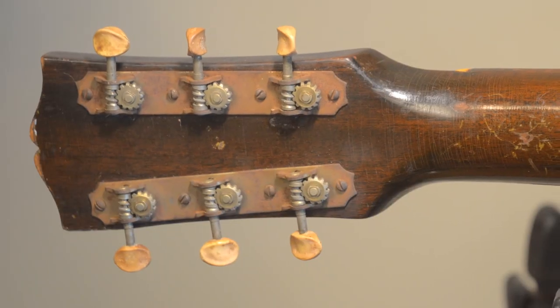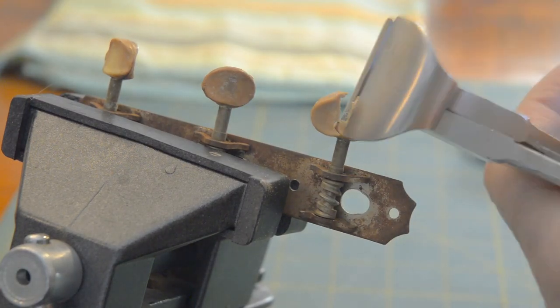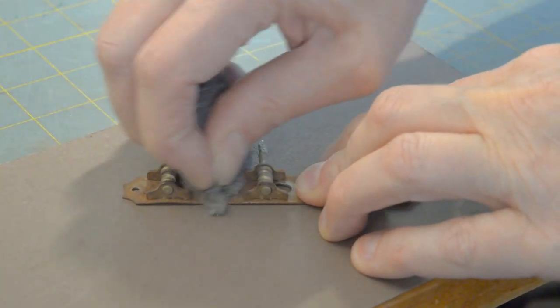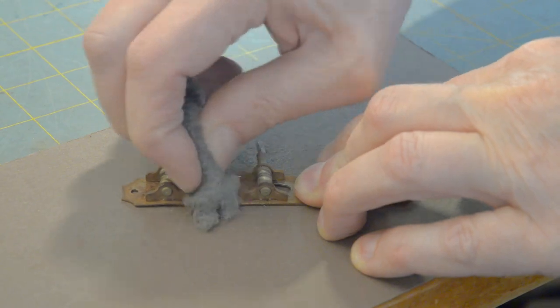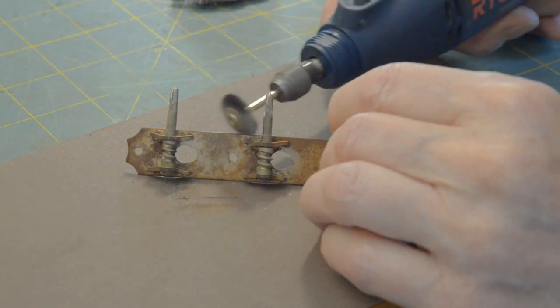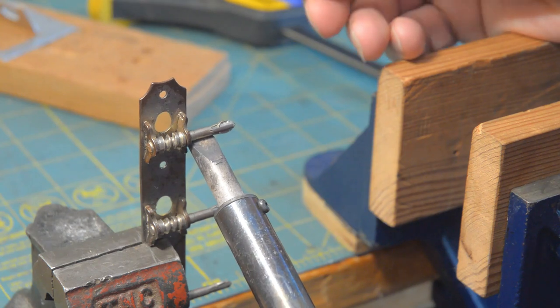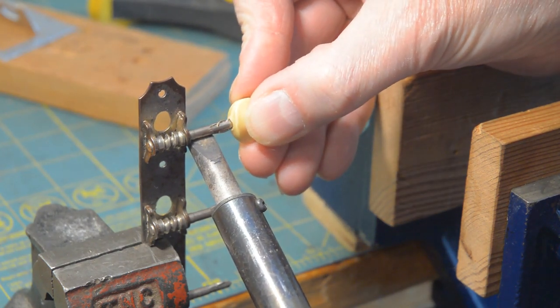These tuners need some attention. First I'll nip off the old rotten buttons. Then steel wool the plates. Some dremeling. Then you heat the shaft and you push on the new buttons. And on the tuners go.